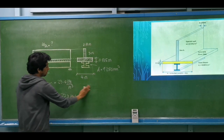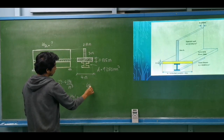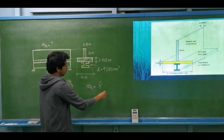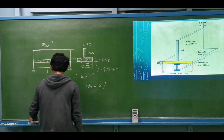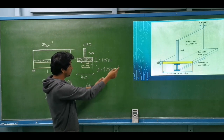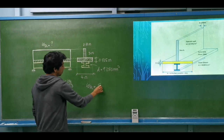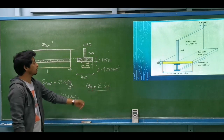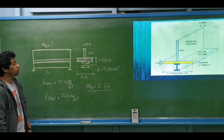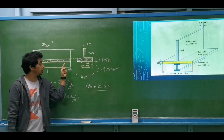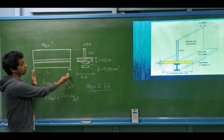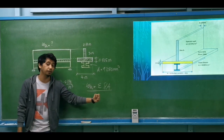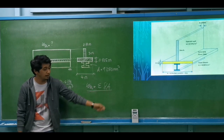To compute for the equivalent uniform dead load, it is equal to the unit weight multiplied by the area — or summation since we have different types of materials. We have the summation of unit weight multiplied by the cross-sectional area. What we have to do is distribute the weight of each material throughout the length of the beam.